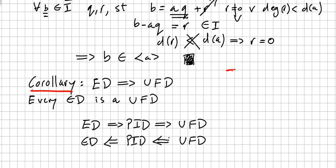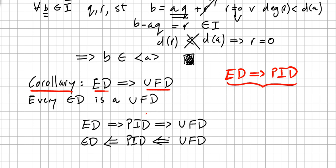The previous theorem says that every Euclidean domain is a principal ideal domain. And here, as a corollary of that theorem, we can say every Euclidean domain is also a unique factorization domain. So if you chain the theorems: every Euclidean domain is a principal ideal domain, and every Euclidean domain is also a unique factorization domain.